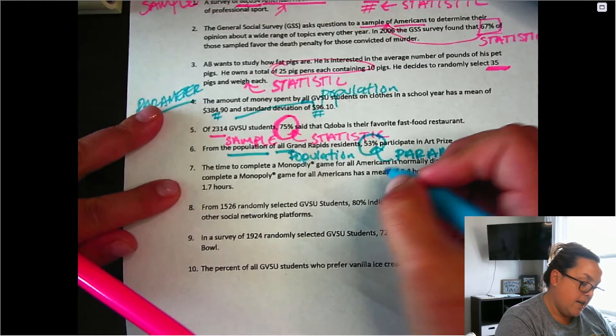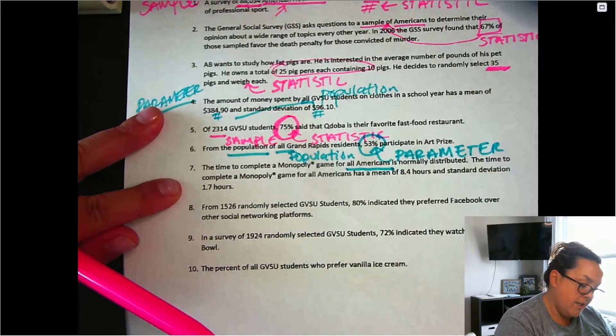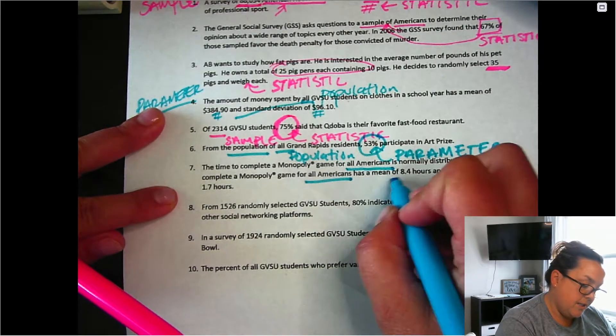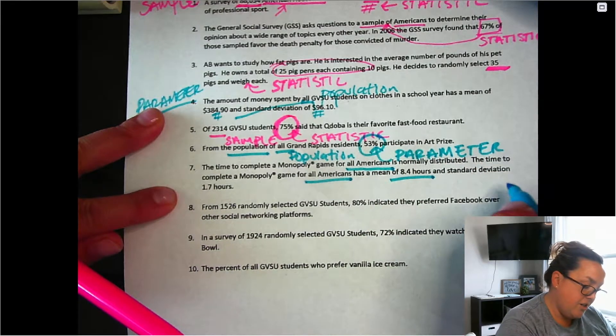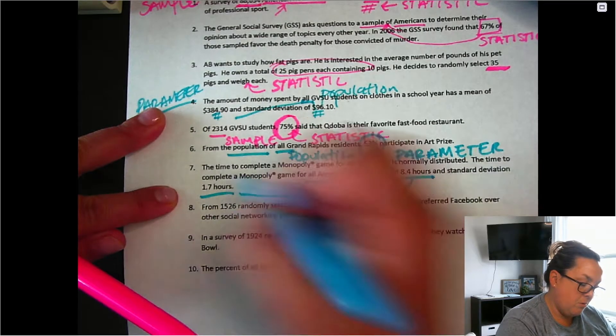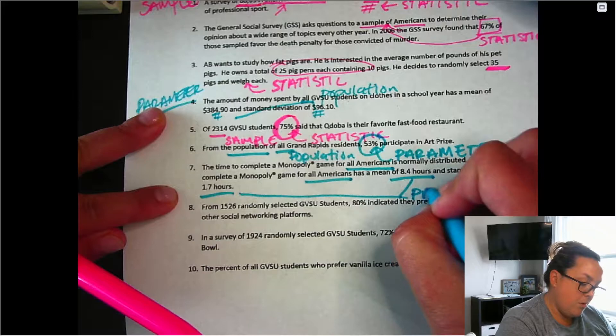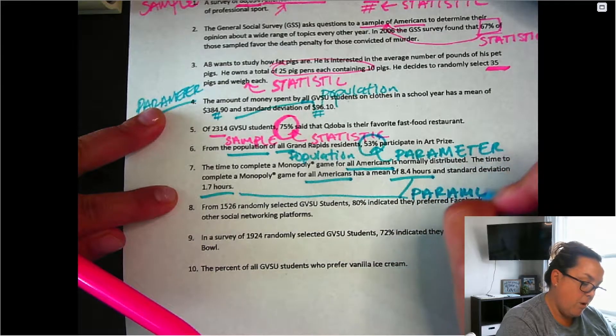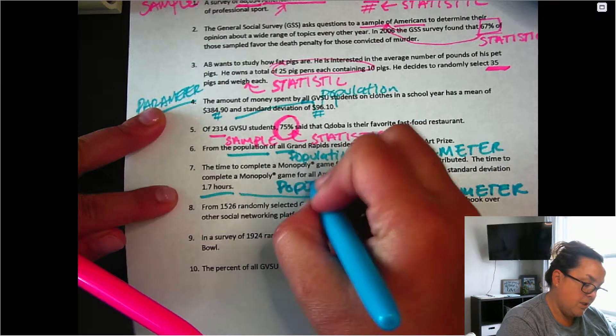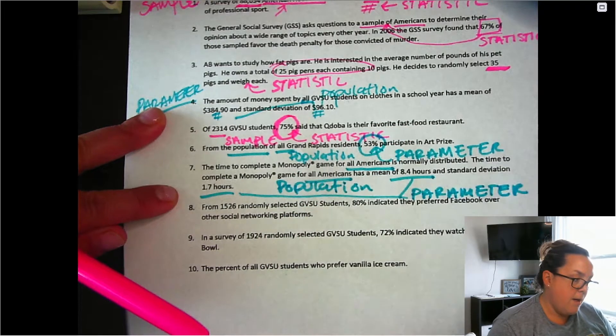Next, we have time to complete for all Americans. And so the time is said to be for all Americans, 8.4 as an average, standard deviation of 1.7. These are both parameters because we are referring to the all Americans, which means that's a population, and that makes the values referring to that group parameters.